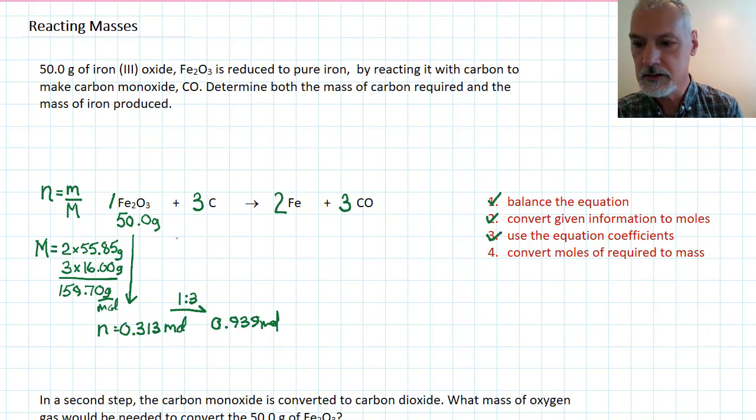and my final step now is to take that information, convert that back into grams, and that requires, again, the molar mass, in this case, of carbon, which is 12 grams per mole. And, by rearranging this equation, the mass will be the number of moles times the molar mass, multiplying these two together. And, when I do that, I get 11.3 grams. So, that's my solution to determining the first part of this question, the mass of carbon required.